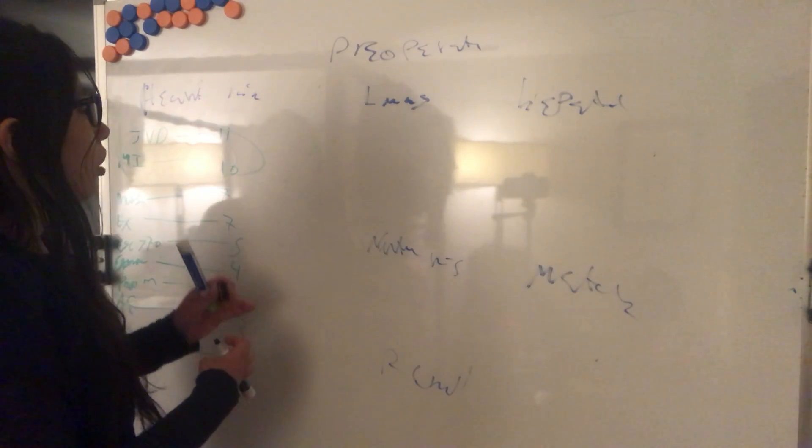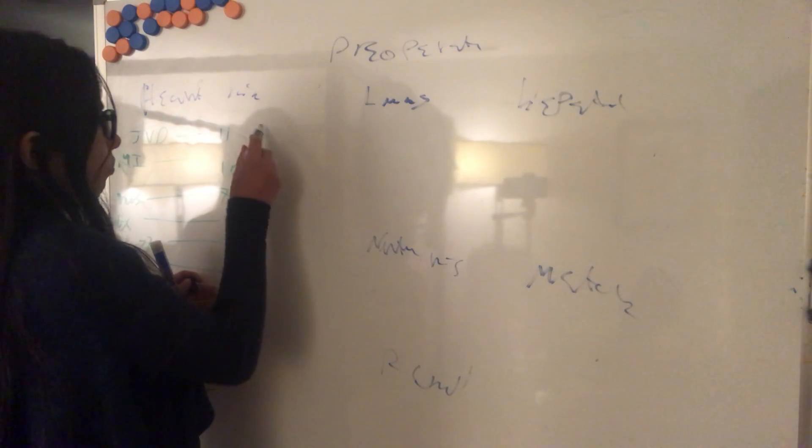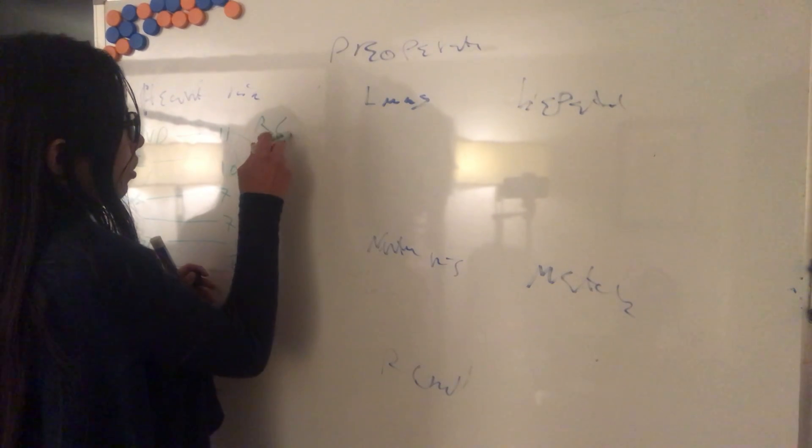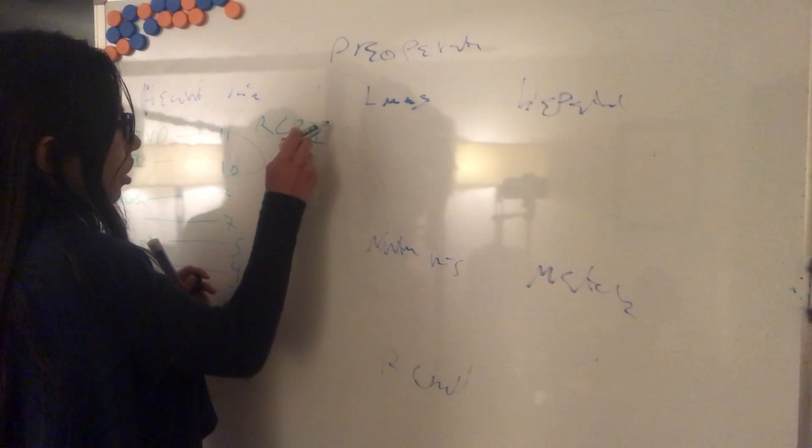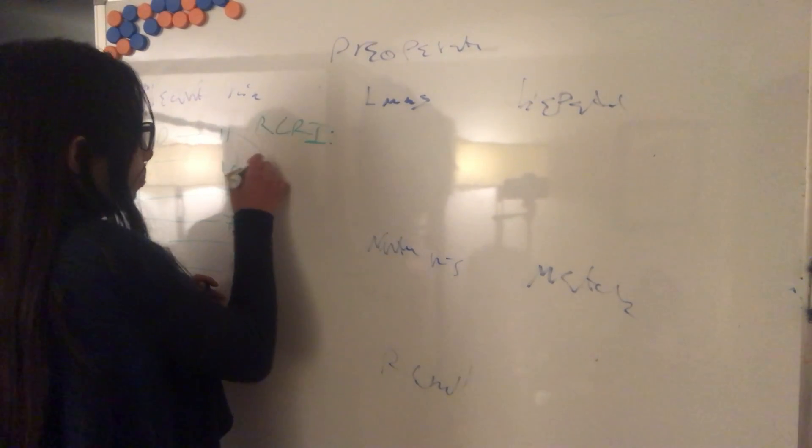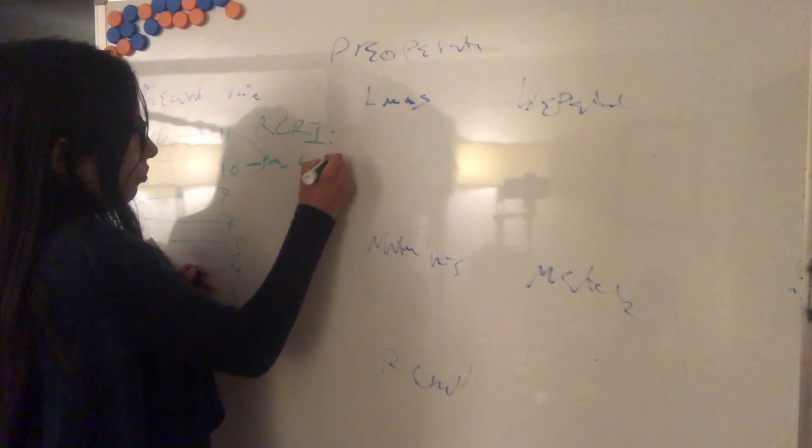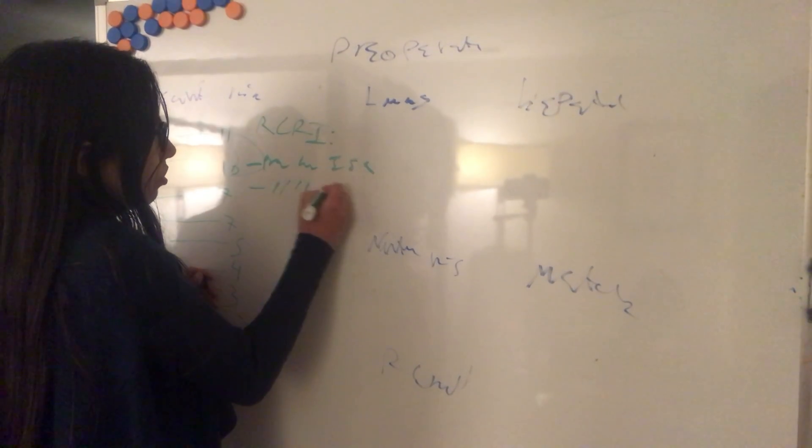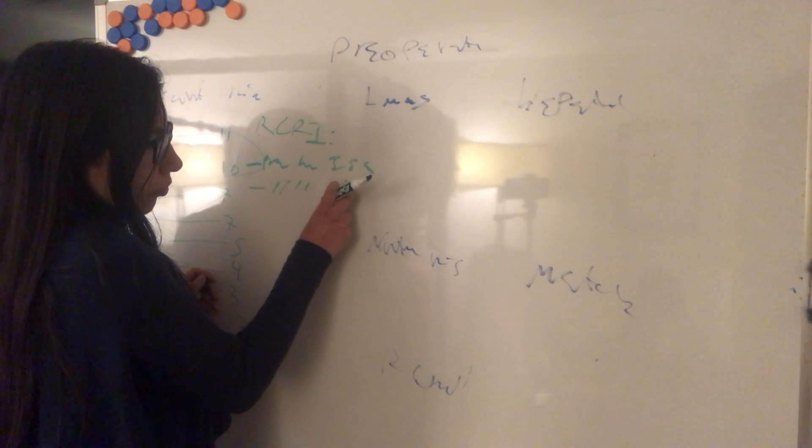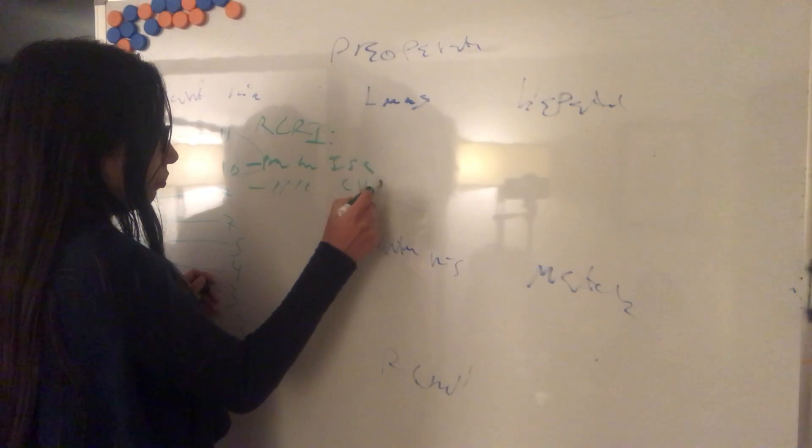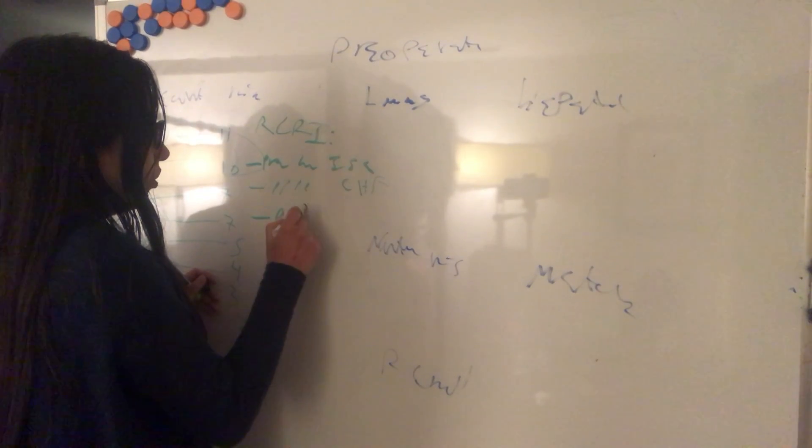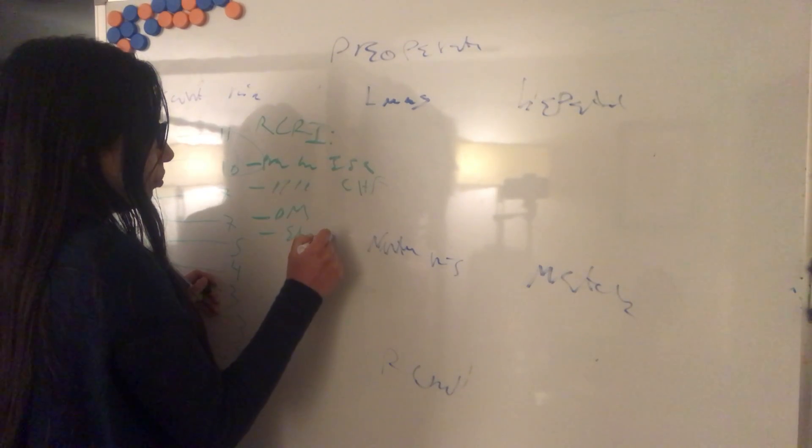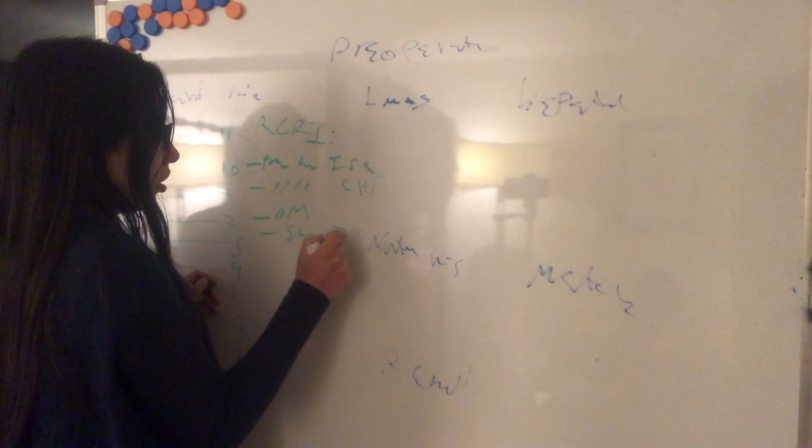We also have the revised cardiac risk index. These include previous history of ischemic heart disease, previous history of congestive heart failure, diabetes mellitus, stroke or transient ischemic attack.